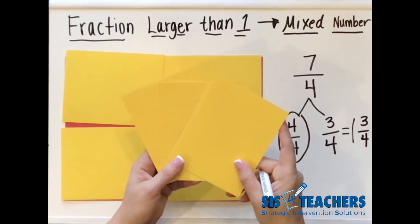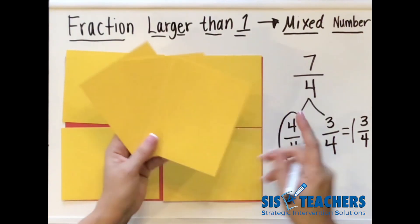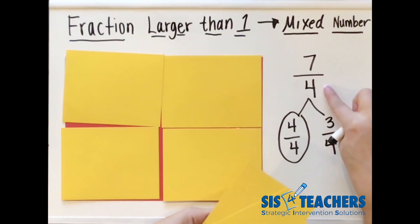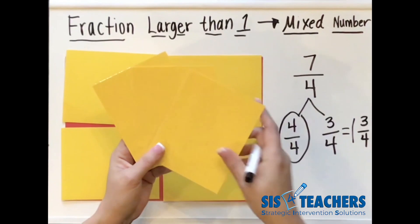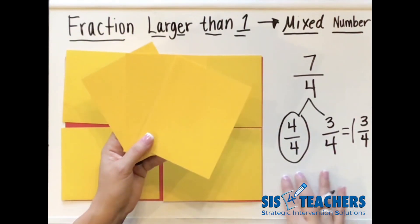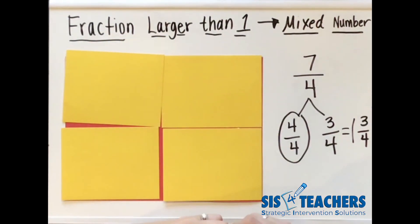I think using the area model papers or pattern blocks for students to understand how to take a fraction that's larger than one and decompose it is really helpful. You also could do this with larger numbers where you might even pull out one, two, or three holes and then be able to decompose it to have a firm understanding of really what's happening when you have a fraction that is larger than one and transferring it into a mixed number.